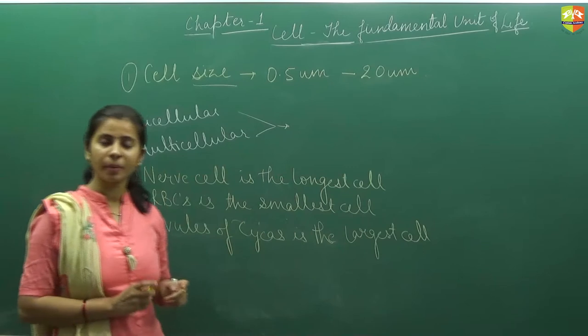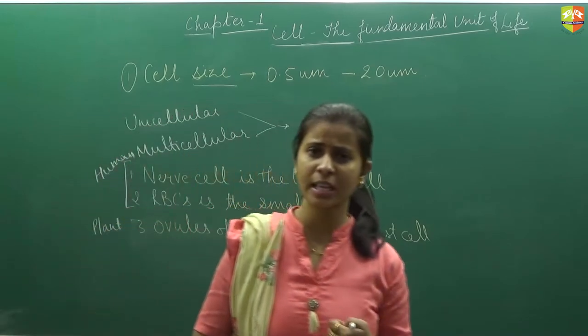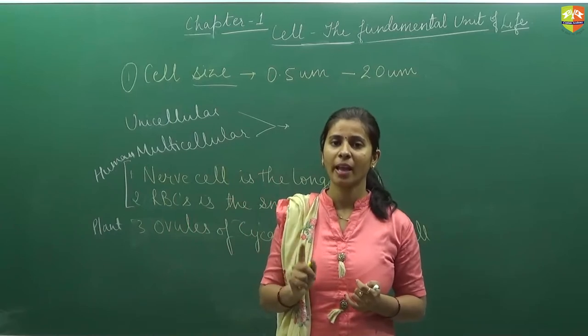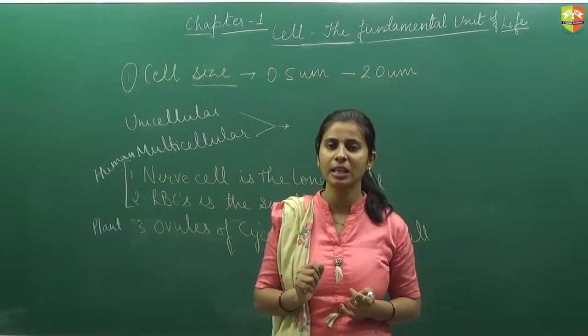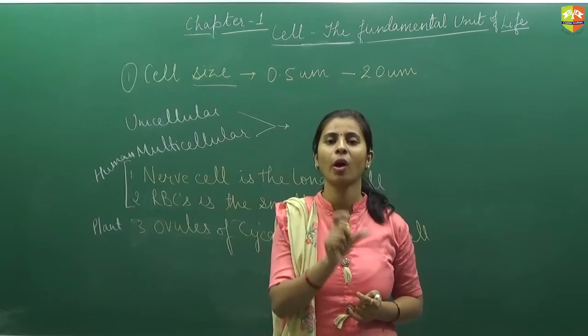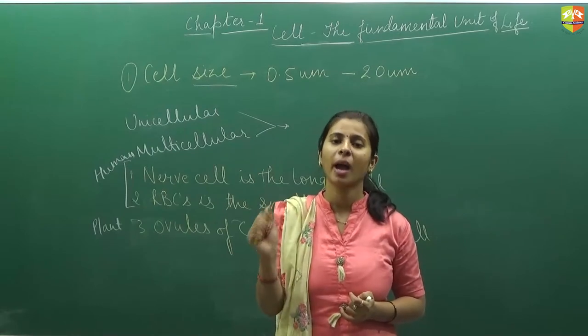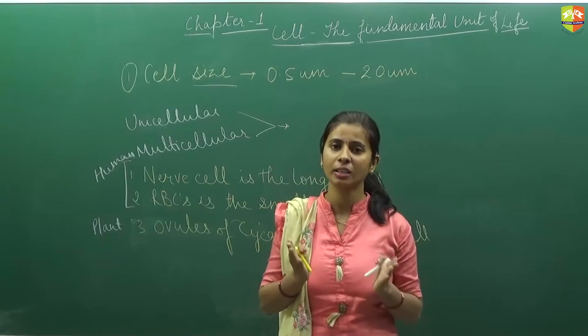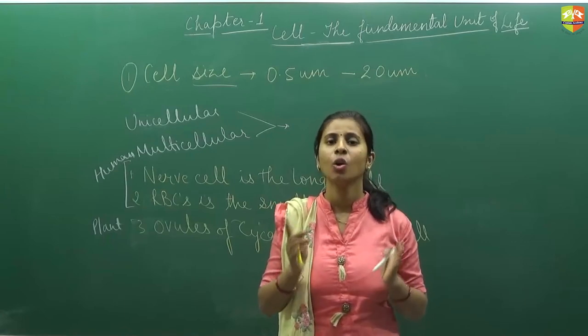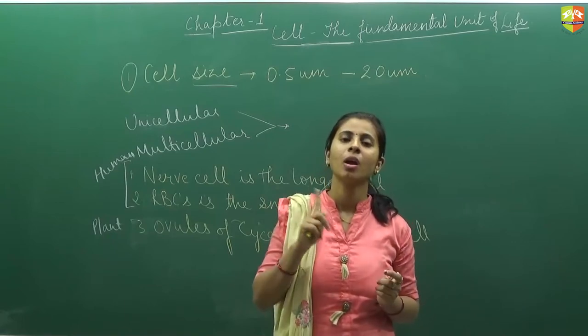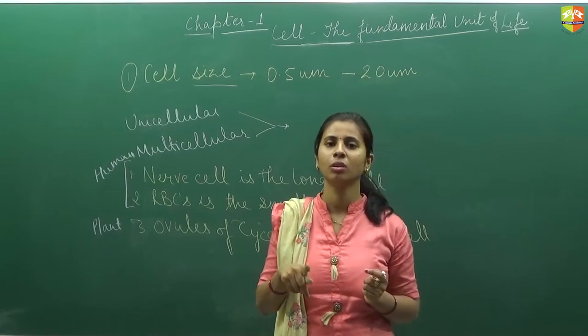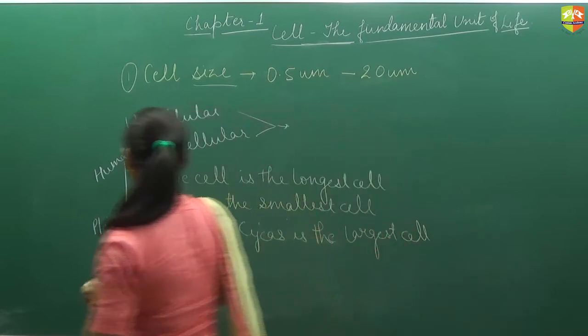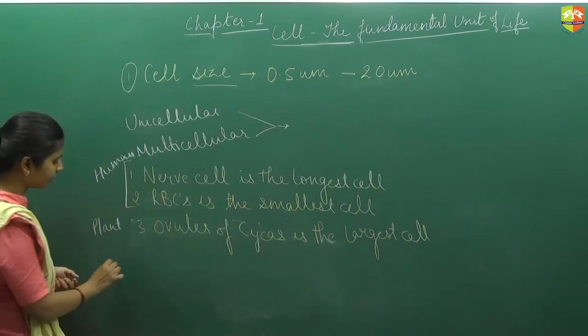Now we will consider generally which is the smallest cell and which is the largest cell. So PPLO, mycoplasma is the smallest cell. Its size ranges from 0.1 to 0.5 micrometer in diameter. And when we talk about largest cell, then the largest cell is the ostrich egg whose size ranges up to 15 centimeter in diameter.